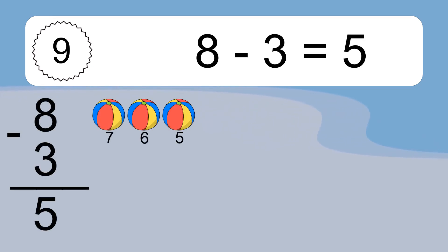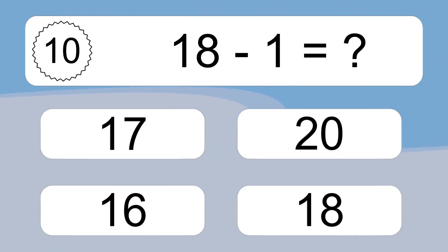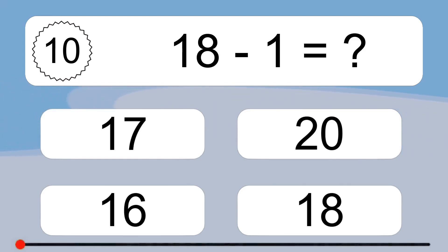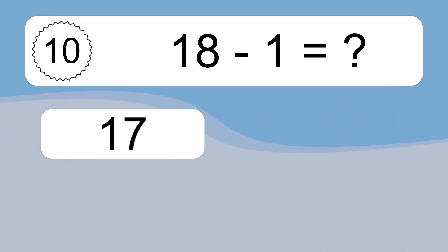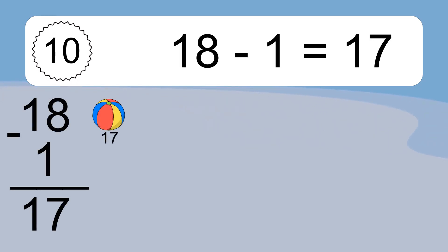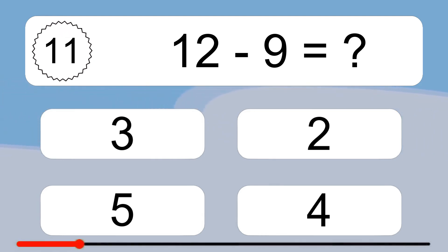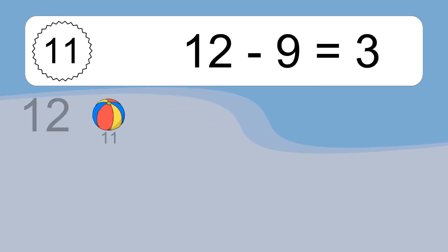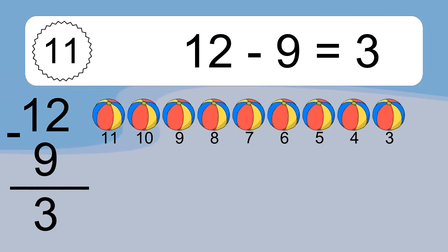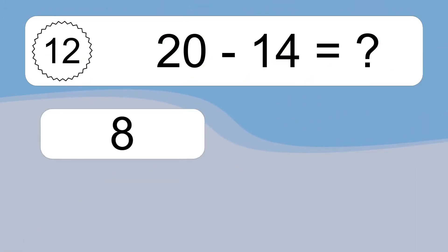8 minus 3 equals 5. Let's count it: 7, 6, 5. 18 minus 1 equals what? 18 minus 1 equals 17. Let's count it: 17. 12 minus 9 equals what? 12 minus 9 equals 3. Let's count it: 11, 10, 9, 8, 7, 6, 5, 4, 3. 20 minus 14 equals what?